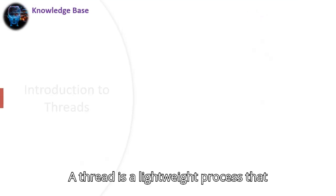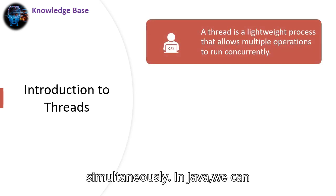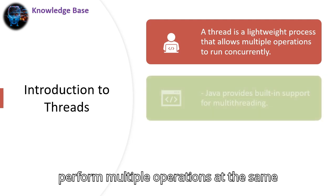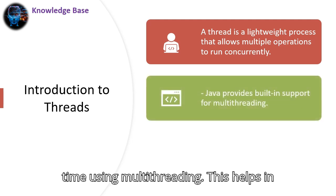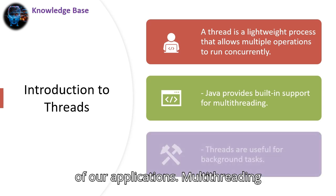So let's get started. A thread is a lightweight process that allows multiple tasks to run simultaneously. In Java, we can perform multiple operations at the same time using multithreading. This helps in improving the efficiency and performance of our applications.